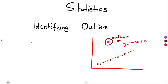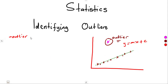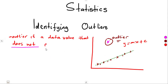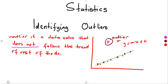So, what exactly is it? Of all the given information, we are simply saying an outlier is a data value that does not follow the trend of the rest of the data. Look where this point is, and look where these other points are — this one does not follow the trend. That is what we refer to as an outlier. An outlier is a data value that does not follow the trend of the rest of the data.